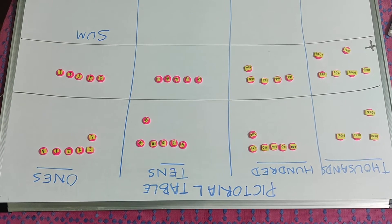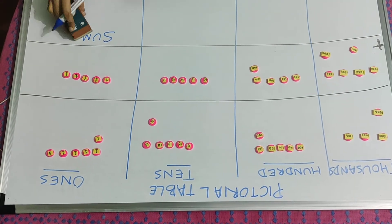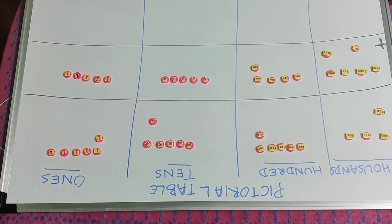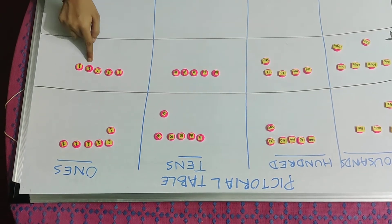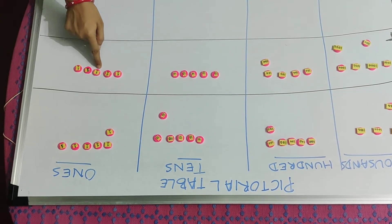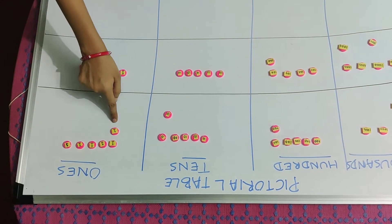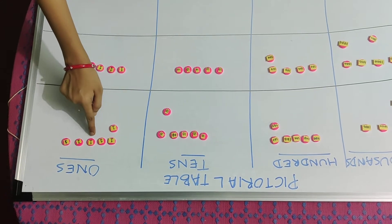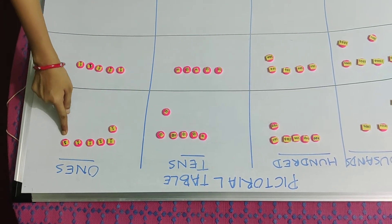Now first let us start counting the numbers in the ones place: one, two, three, four, five, six, seven, eight, nine, ten, eleven.